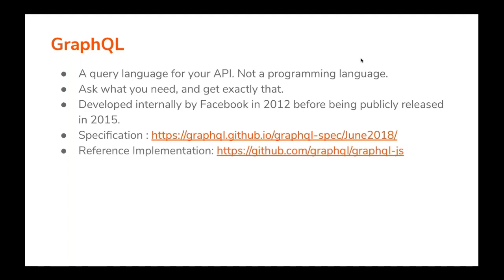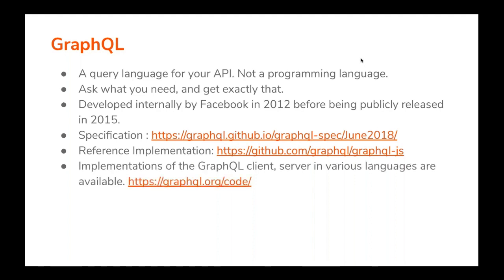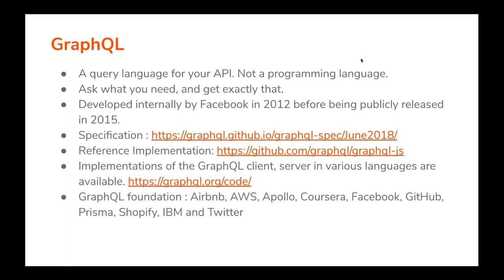There is a specification and a reference implementation which you can download via the provided URLs. The reference implementation is in JavaScript. Implementations of the GraphQL client and server in various other languages are also available, making it easy for existing systems built with various programming languages to embrace GraphQL. The GraphQL community is also very active around the world and hosts various conferences throughout the year. Some organizations have come together to form a foundation, and many have been exposing their public APIs via GraphQL with immense success.